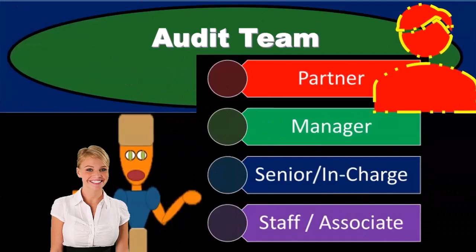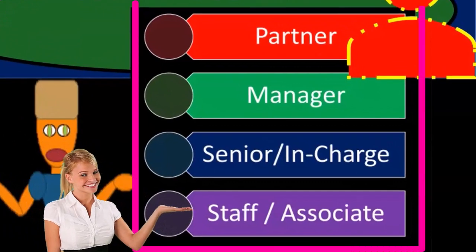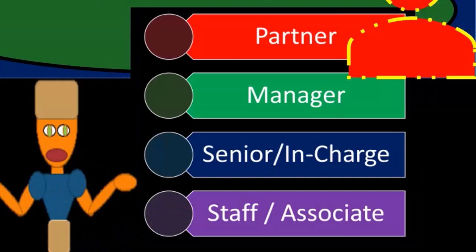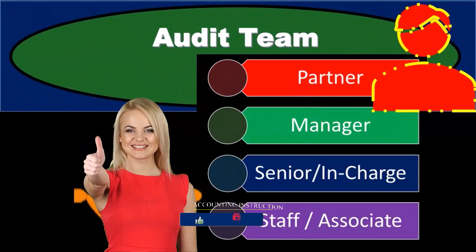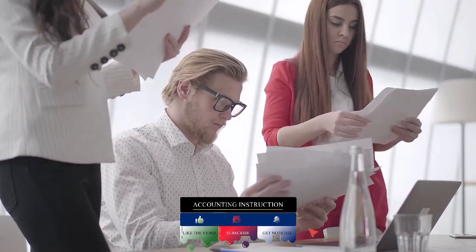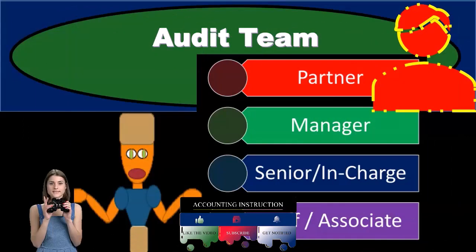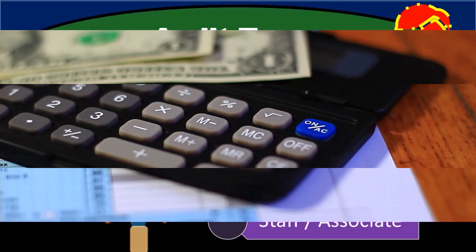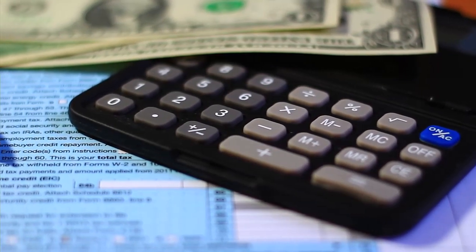With the different duties of the people in those positions of the team — recall that this is just the general type of team that we would put together for an audit, and it would vary to some degree depending on the size of a CPA firm. If we're a sole proprietor or a very small CPA firm, we may have some variation from this standard team structure and terminology.